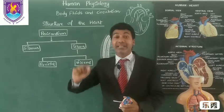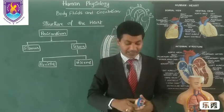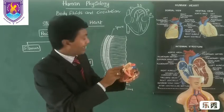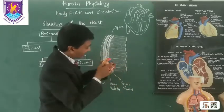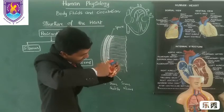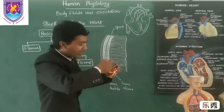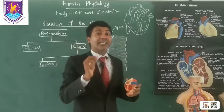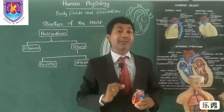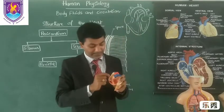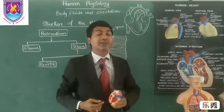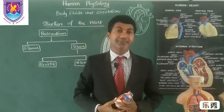Pericardium is different — it is a covering of the heart. Looking at the diagram, the outer layer of the heart wall is epicardium, the middle is myocardium, and the inner lining is endocardium. Endocardium is an endothelium which covers the inner walls of the heart and also lines the inside of blood vessels.